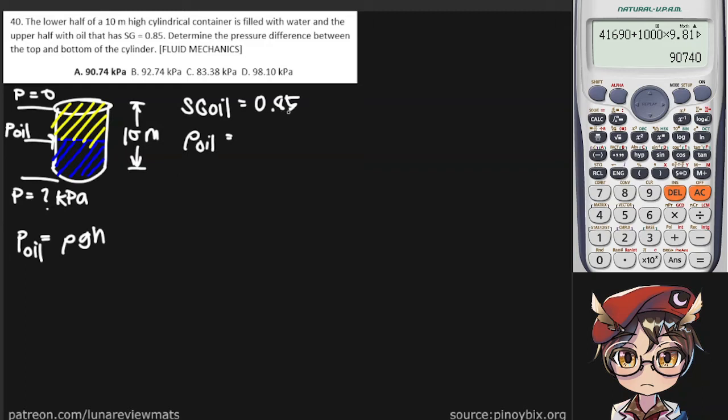So 0.85 times 1000 is 850 kilograms per cubic meter. And we have everything we need to find pressure of our oil. So this one's 850, this one's 9.81.